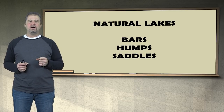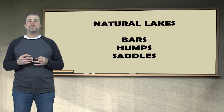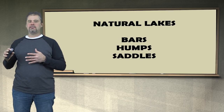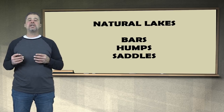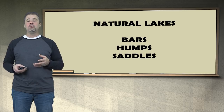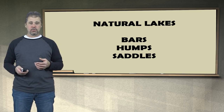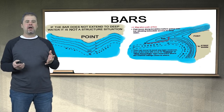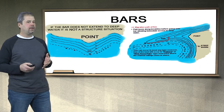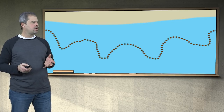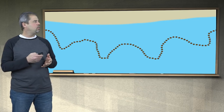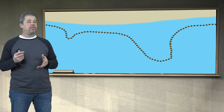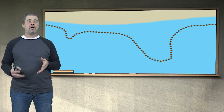We've got many different kinds of structures. In natural lakes, we're going to find bars, humps, and saddles — pretty clear-cut. In man-made lakes, we've got 12 to 15 structures, a lot more. Bars can come in all kinds of shapes and sizes — with many fingers, one finger, wide bars, long narrow bars. The best productive ones are going to be those with access to the deepest water in the area.